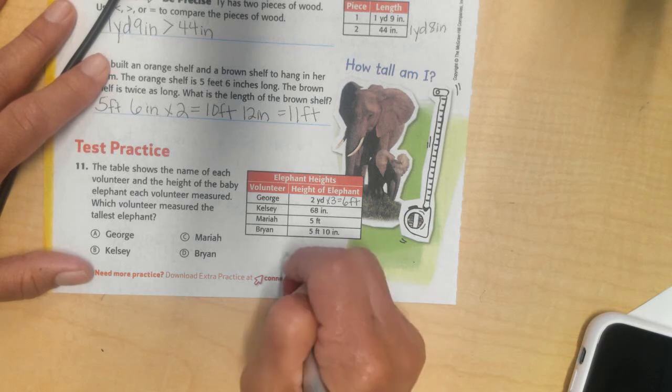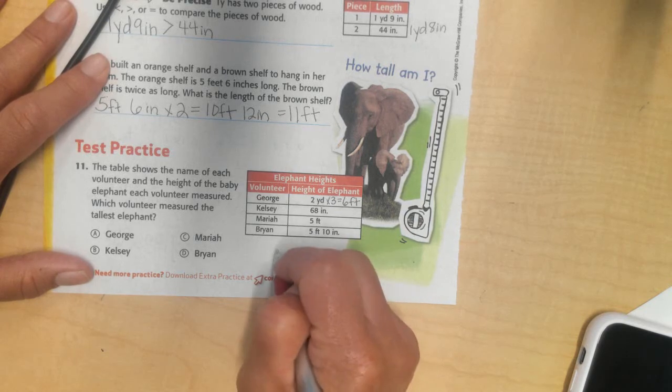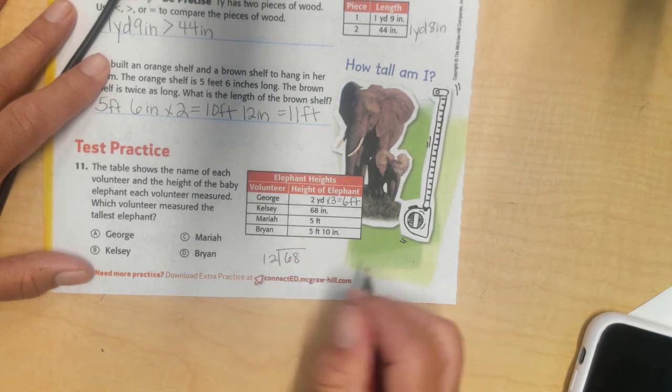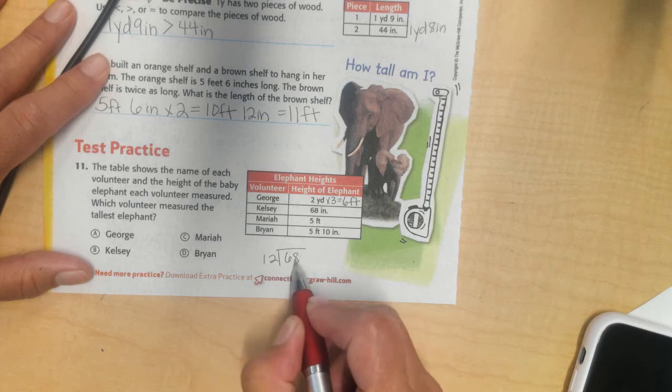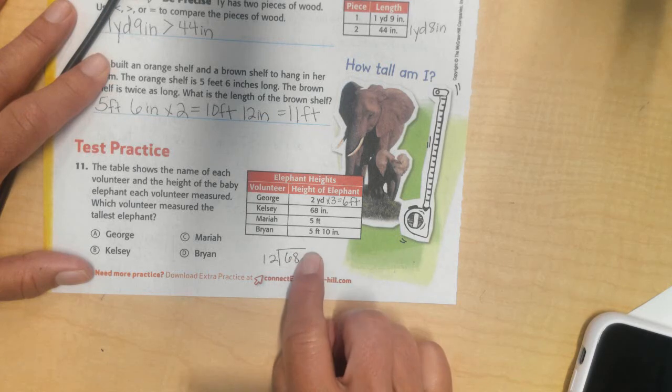68 inches, I have to divide this one up, right? It's the smaller to the bigger. So, how many 12's are there in 68? None, right? How many 12's in 68?